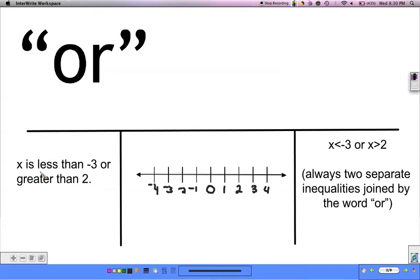So when I say x is less than negative 3, I'm going to cover up the greater than 2 part with my finger and worry about x is less than negative 3 for right now.